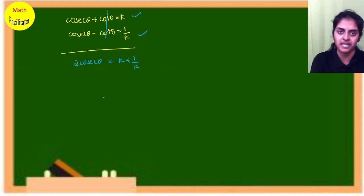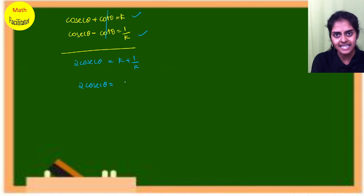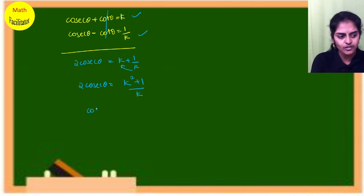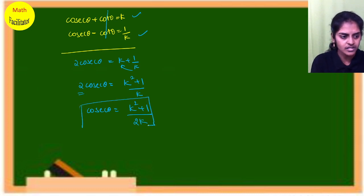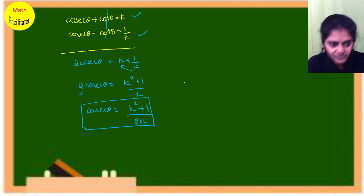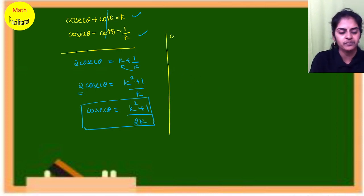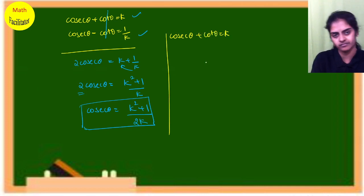So 2 cosecant θ = k + 1/k. Taking LCM: 2 cosecant θ = (k² + 1)/k. Transposing 2 to the other side: cosecant θ = (k² + 1)/(2k).